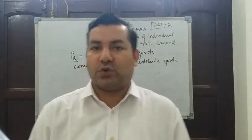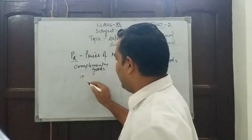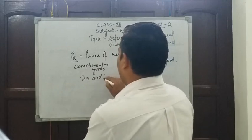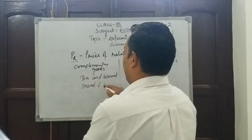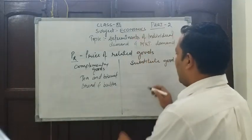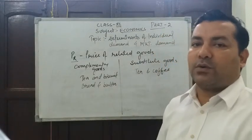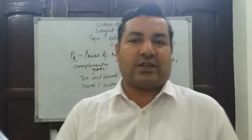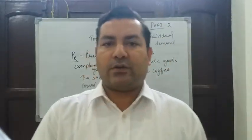Related goods can be of two types: complementary goods and substitute goods. Examples of complementary goods are tea and biscuit, or bread and butter — goods which are consumed together. Tea and coffee are examples of substitute goods — goods which can replace each other are substitute goods, while goods used together are complementary goods.